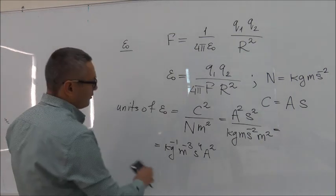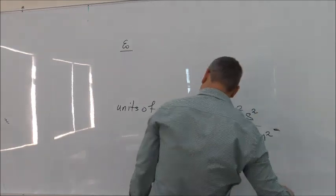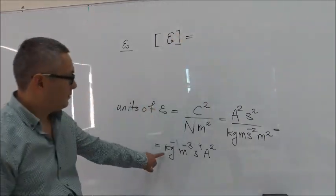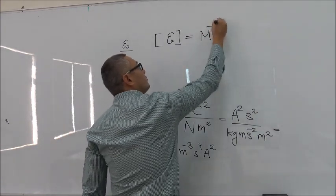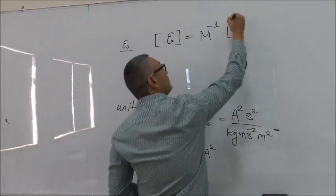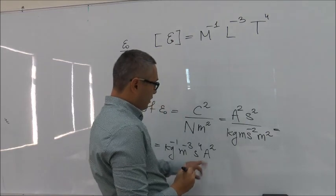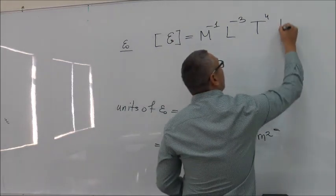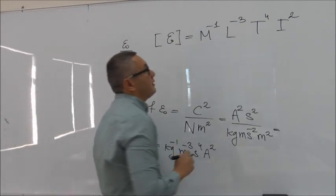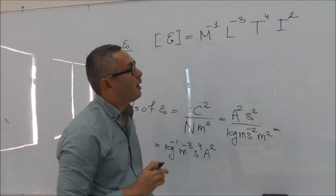So now using that we can write down the dimensions of epsilon zero. So we put epsilon zero in square brackets. Dimension for mass is capital M, so M to minus 1. Dimension for length is capital L, so L to minus 3. Dimension for time is T to the fourth, and dimension for current is capital I. In some literature, dimension for current is labeled as A, but in this course we're going to stick to this notation. We'll use the I for the dimension of current.